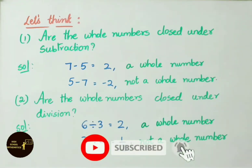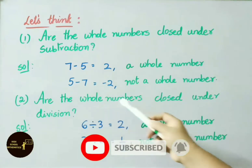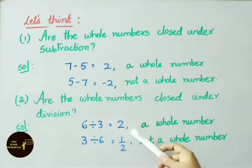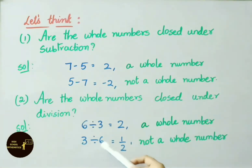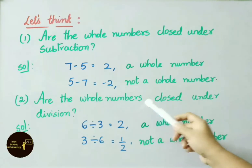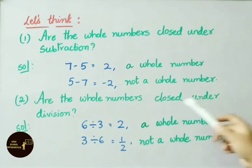Are whole numbers closed under division? Let us see some examples. 6 divided by 3 gives answer 2, which is a whole number. But 3 divided by 6 gives 1/2, which is not a whole number. Therefore, whole numbers are not closed under division.